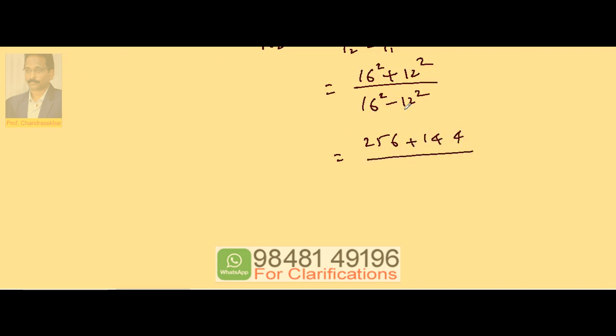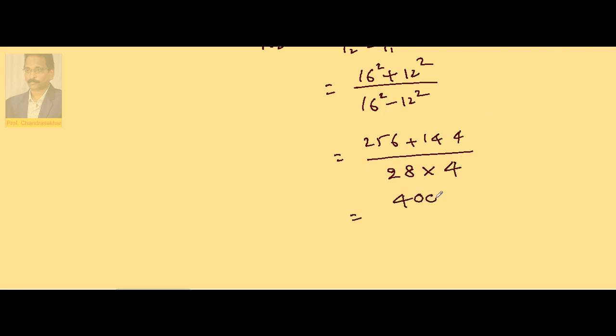This I can write as A plus B into A minus B. A plus B is 16 plus 12, which is 28. 16 minus 12 is 4. Numerator is 400 by 28 into 4. This is 100 times with 4.